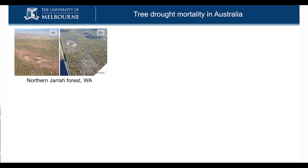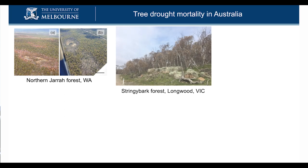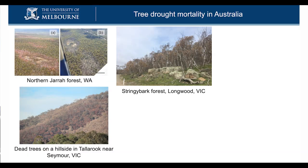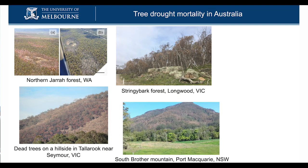Now for the stress side — I'm interested in how trees suffer when they're stressed. We can see parts of Australia — for example, the Jarrah forest in WA — where patches of trees have died. You can find this in the stringybark forest in Longwood, not far from here in the Strathbogie Ranges: large parts of the forest completely brown in summer months. Near Seymour, an entire western-facing edge of a forest — completely dead, not by fire. It looks like fire disturbance, but it is drought disturbance.